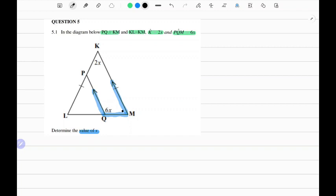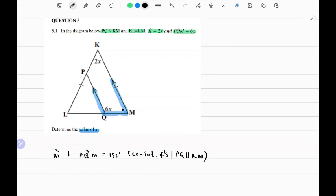We can say angle M plus angle PQM equals 180 degrees. Now we can substitute: PQM is 6X, so M plus 6X equals 180 degrees.